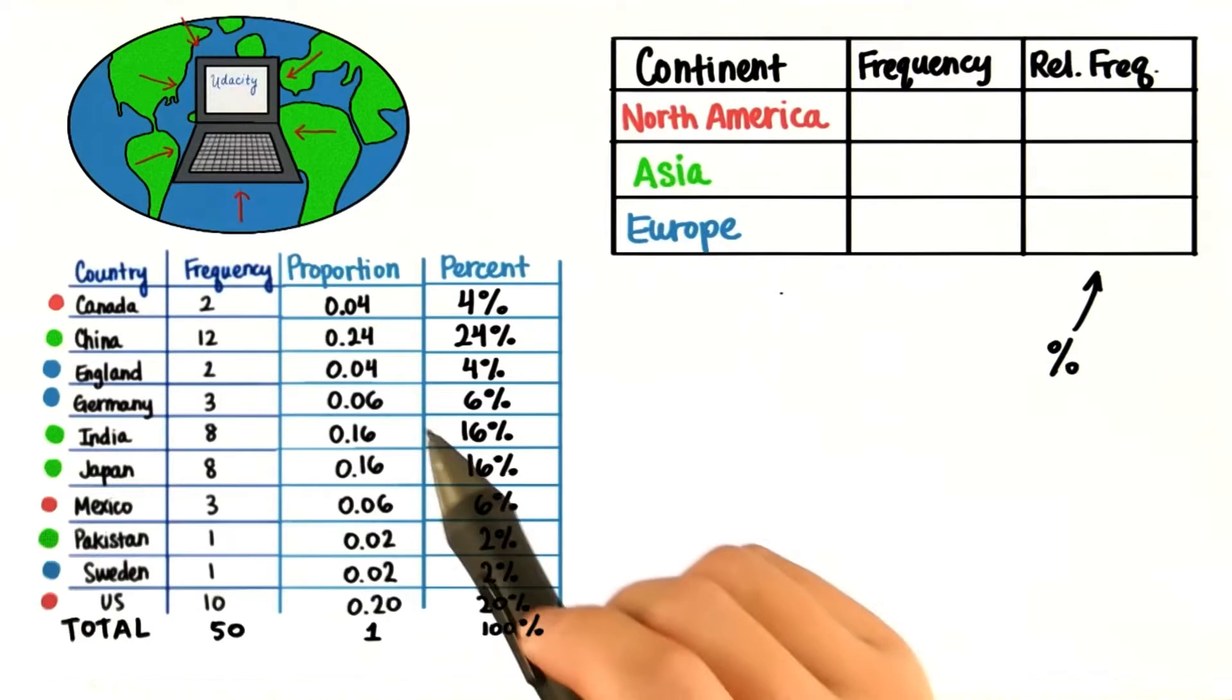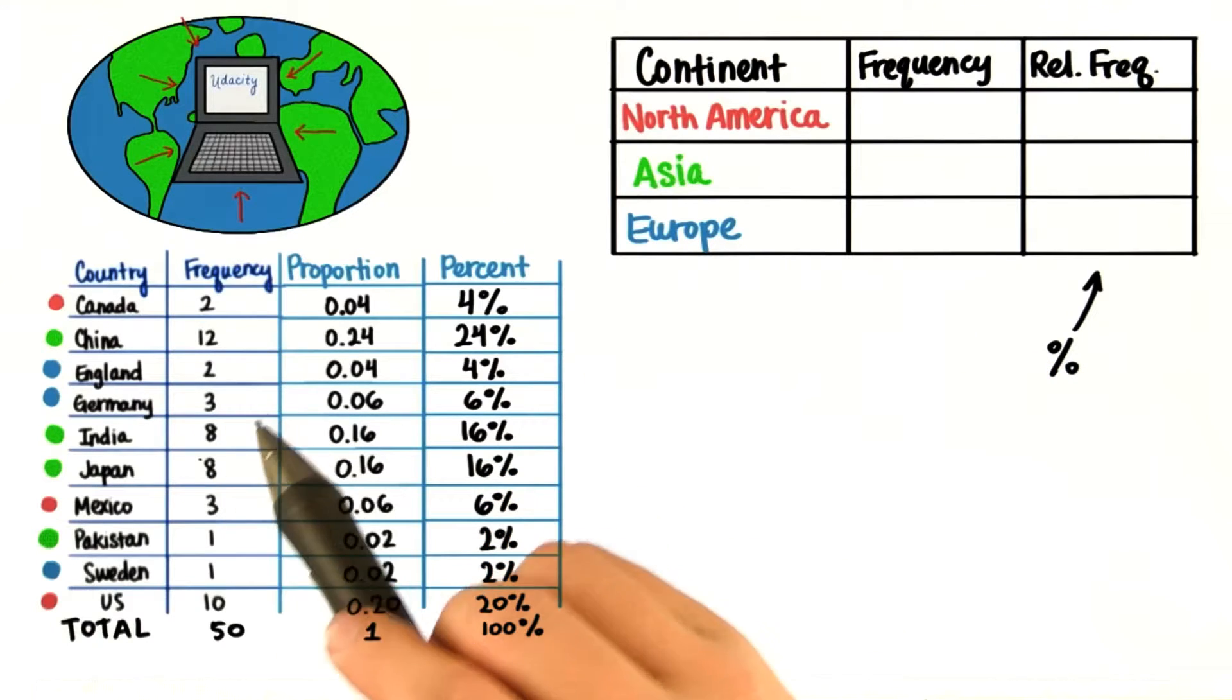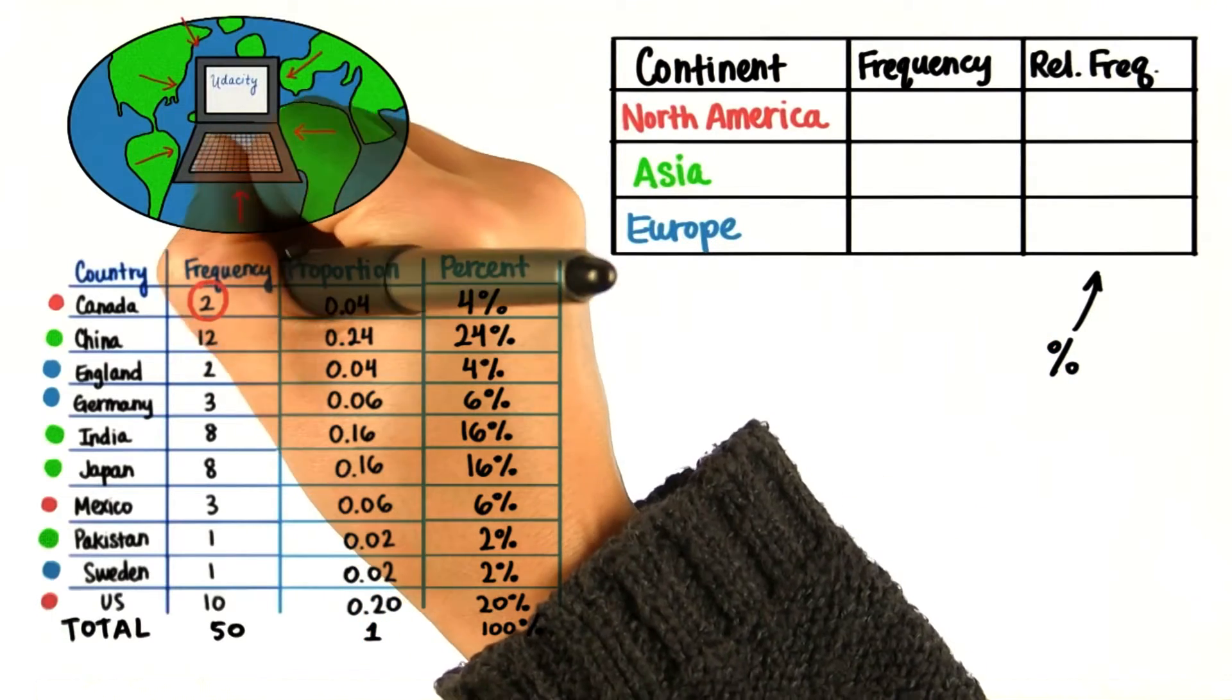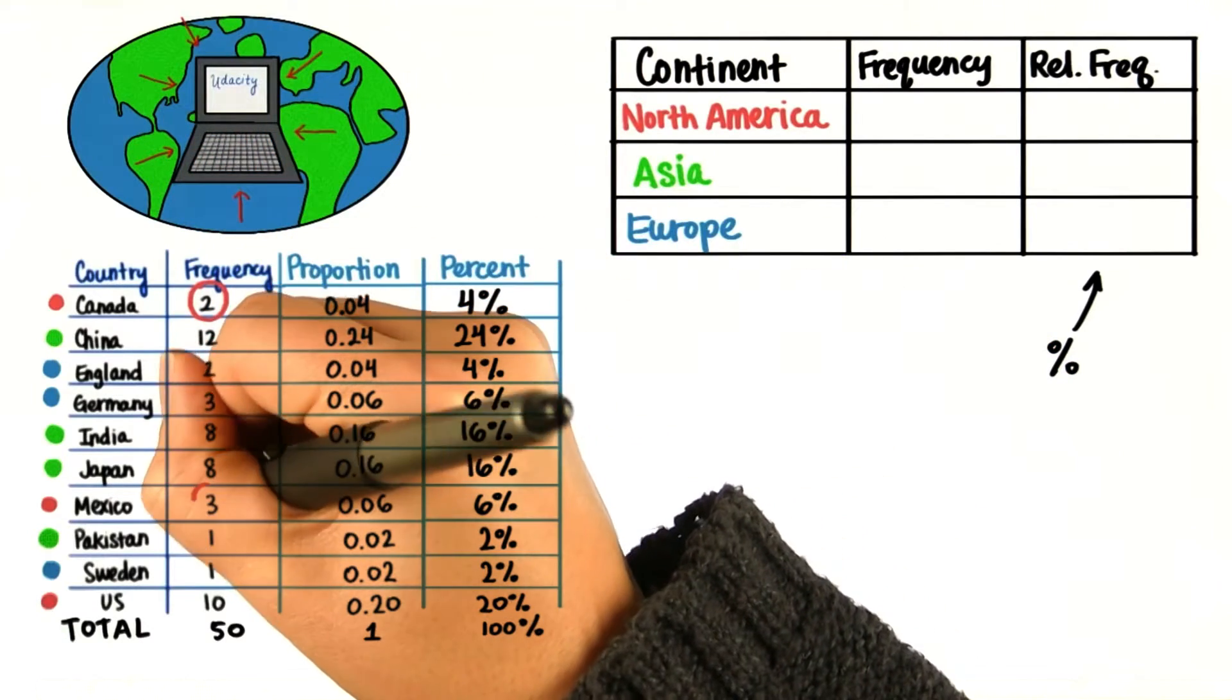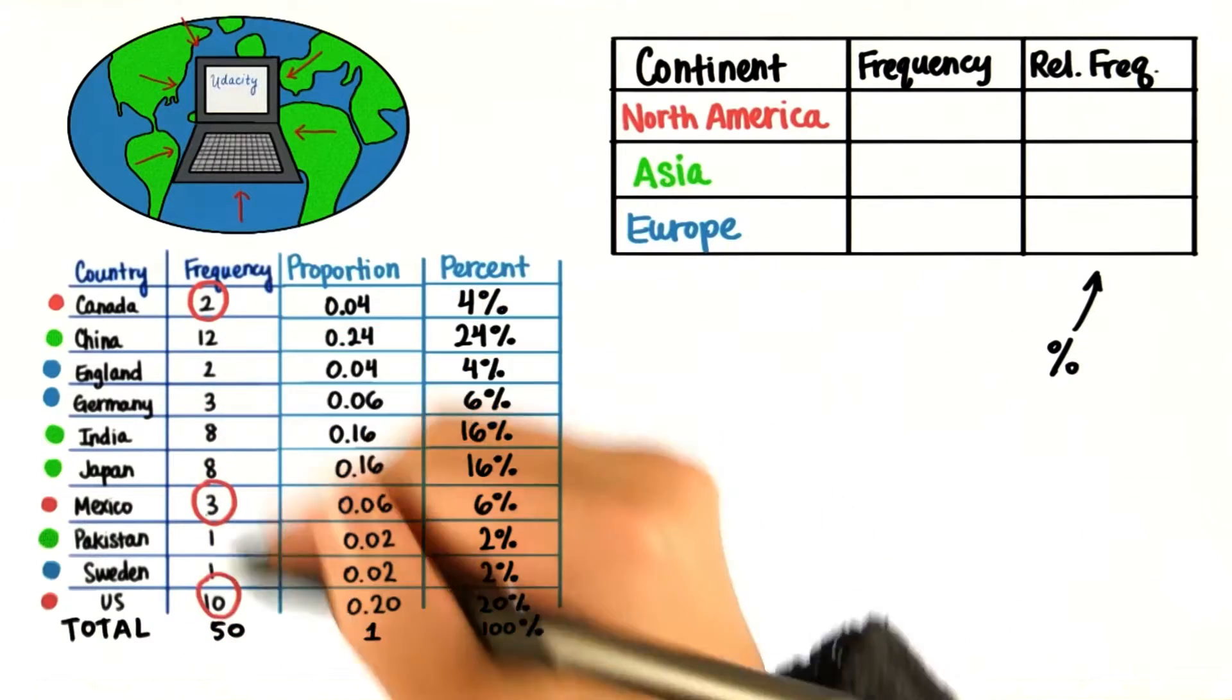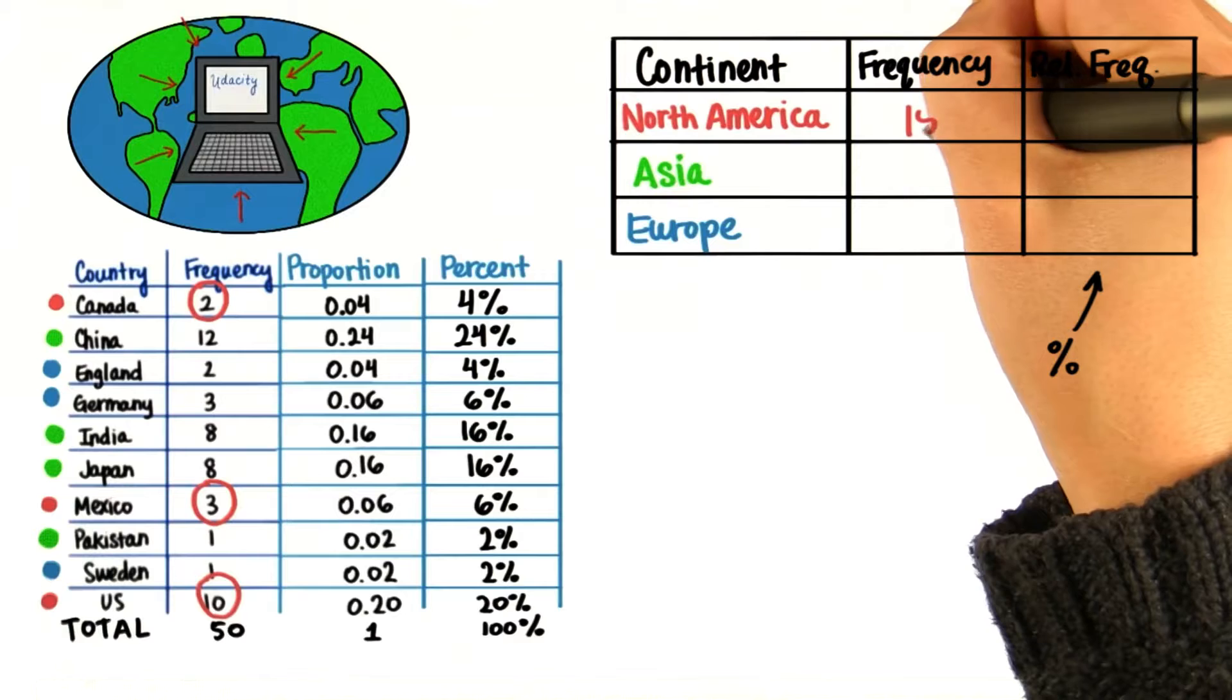To do this, all we do is add the frequencies in each country belonging to the different continents. There are two students from Canada, three from Mexico, and 10 from the US. So if we add them, we get 15 students from North America.